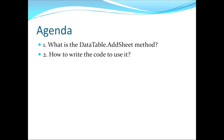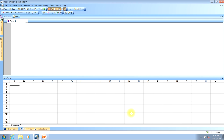This now moves us to the second topic which asks how to write the code to use it. I will now flip over to QTP to show you that example. The code to use the DataTable.AddSheet method is very easy to use since it only takes a few words on one line in the script.